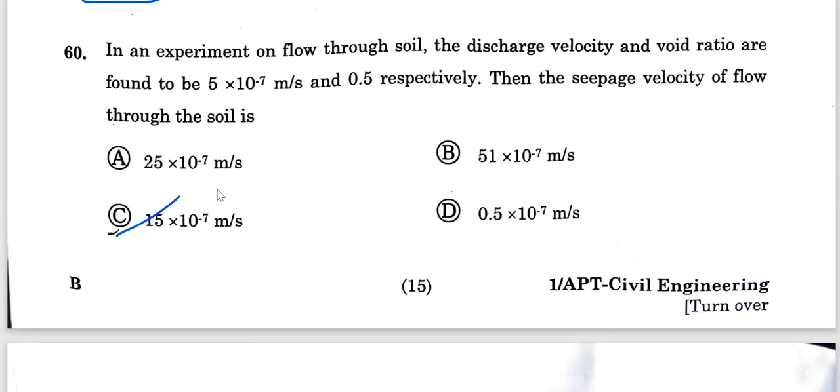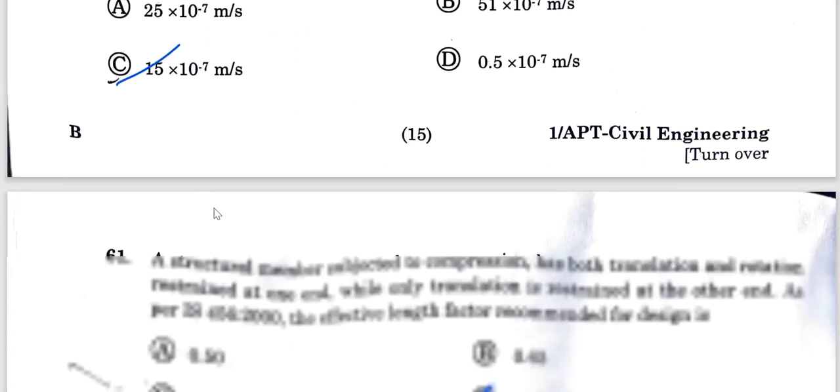Question 60: In an experiment on flow through soil, the discharge velocity and void ratio are found to be 5 times 10 to the power minus 7 meters per second and 0.5 respectively. First convert the void ratio into porosity, n equals e divided by 1 plus e. After calculating, the seepage velocity of flow through soil is 15 times 10 to the power minus 7 meters per second. Option C is correct.